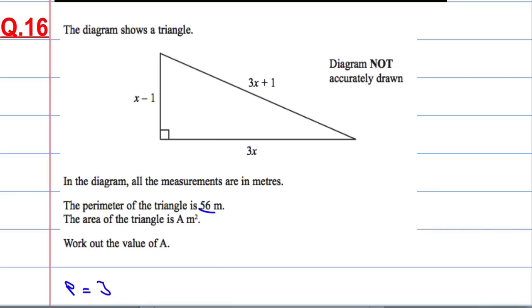So, if I add up all the sides—the perimeter—3x plus 1 plus 3x plus x minus 1, that's all the sides. If I add up all the sides, I should get an answer of 56 metres.